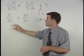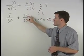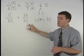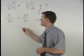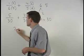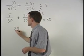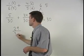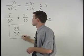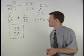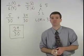5 over 30 plus 24 over 30 is 29 over 30, which is our final answer.